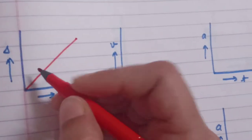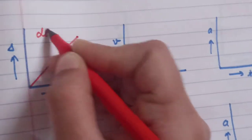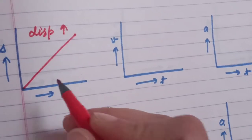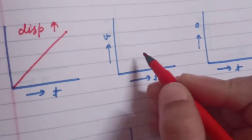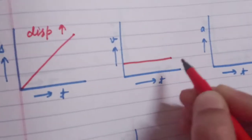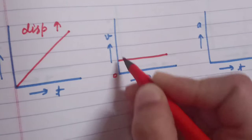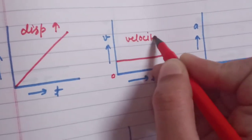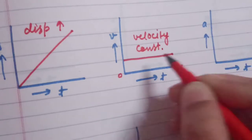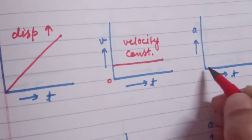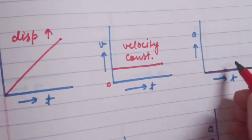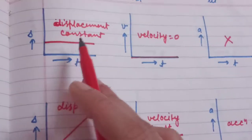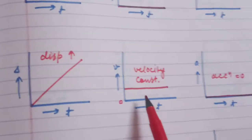For the next condition, when velocity is constant, displacement increases. This is shown in the ST graph as an increasing line. In the VT graph it is parallel and on the positive side — velocity is constant. When velocity is constant, the acceleration is zero, so in the AT graph the condition shows acceleration equal to zero.